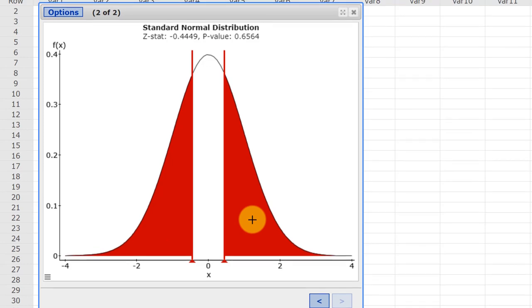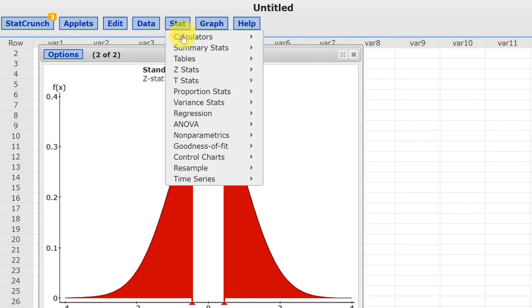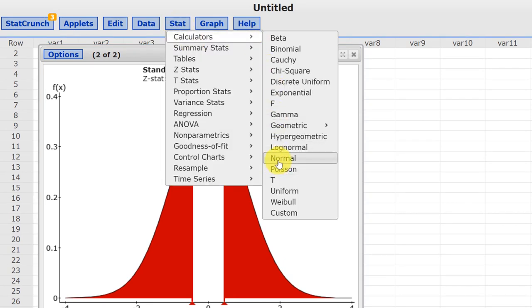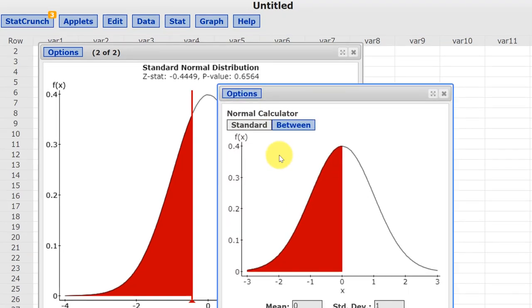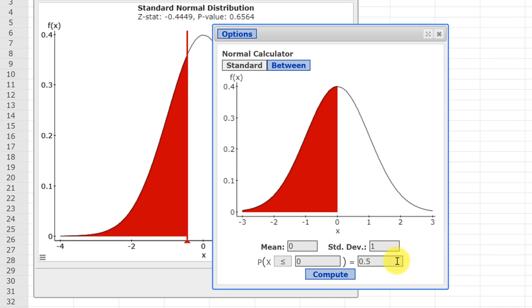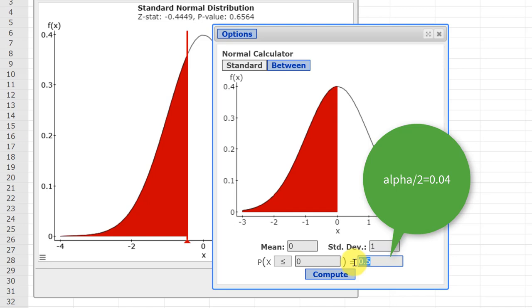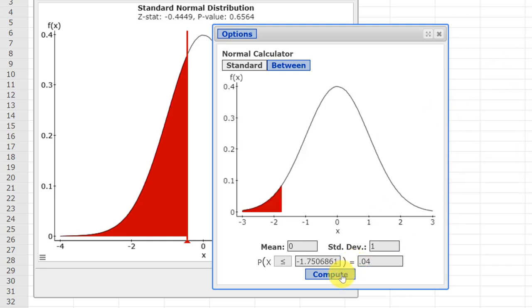Now we need the critical value. So we go back to Stat and we're going to go on calculators and we get the normal calculator to come up. And we can just take the defaults which is the standard normal distribution values. Make sure we have the left tail selected to be consistent and we're going to put our alpha divided by two, 0.04 in there. And we click compute and we get the lower side critical value minus 1.75 and by symmetry we know there's our upper critical value positive 1.75.